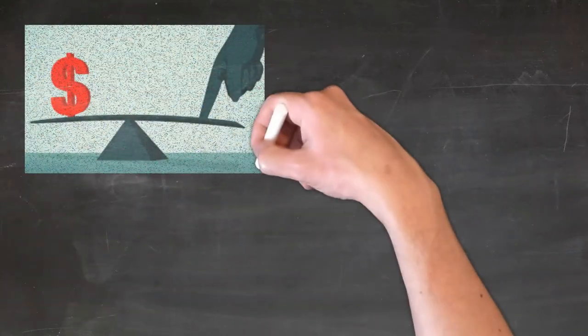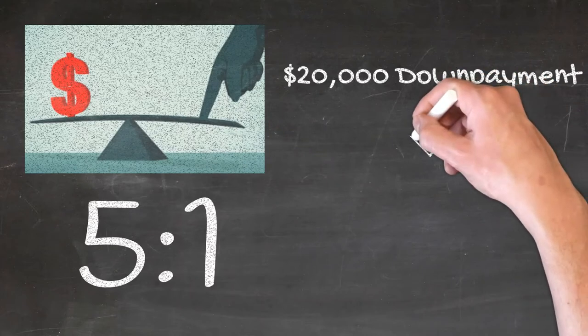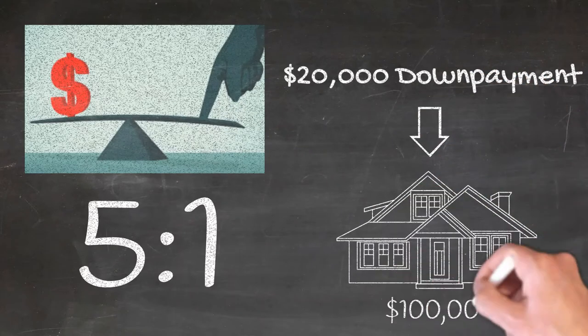This is an illustration of leverage in real estate. You manage to buy the home at a leverage of 5 to 1 since you're only forking out $20,000 right now.